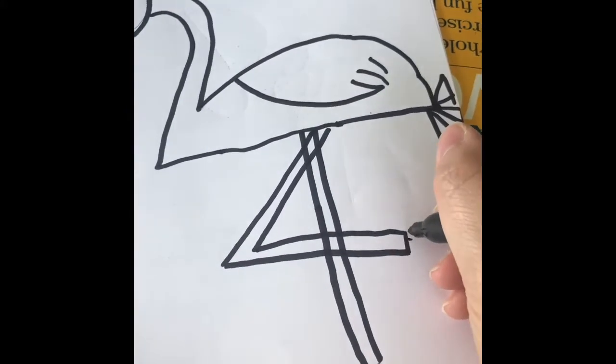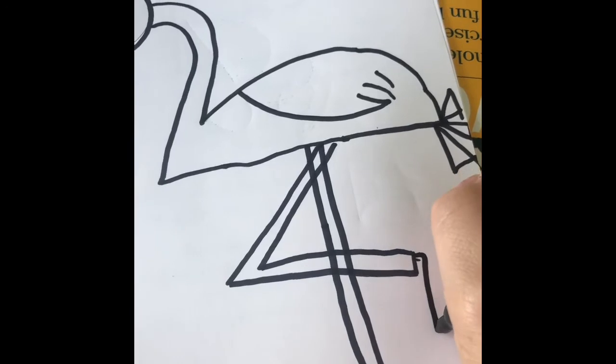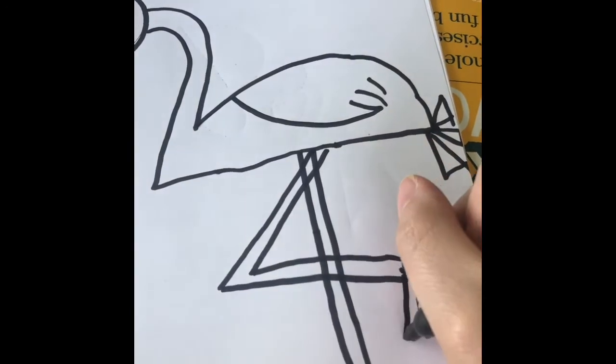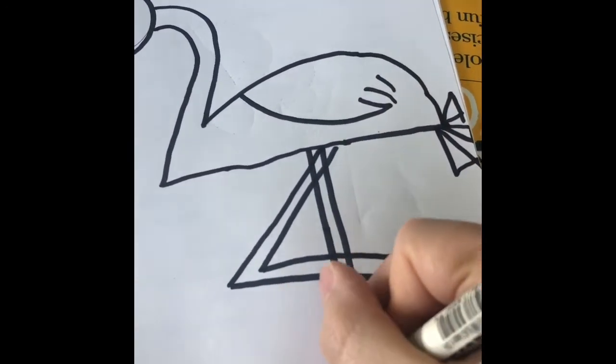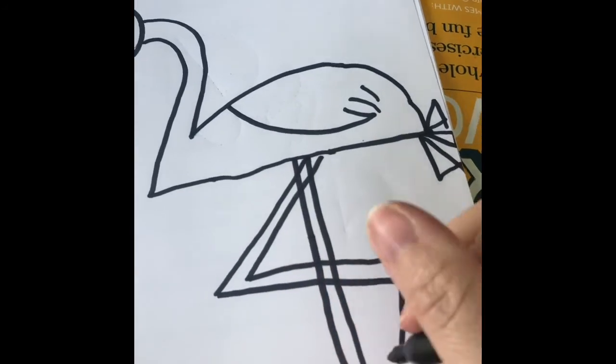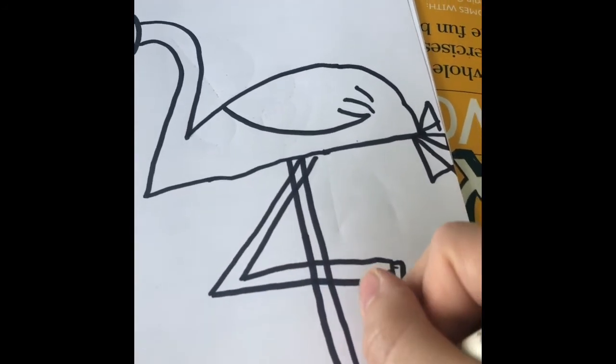And we're going to add his little flipper feet. Kind of like a little triangle here. A little sideways triangle.